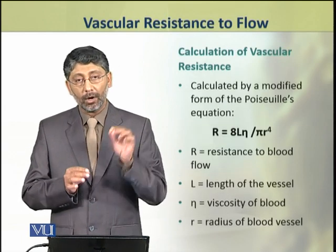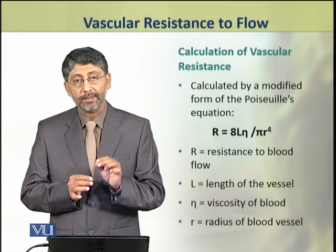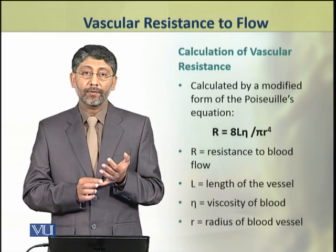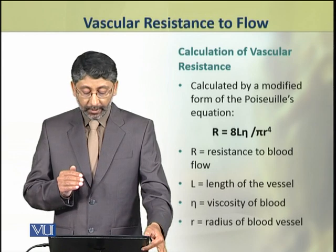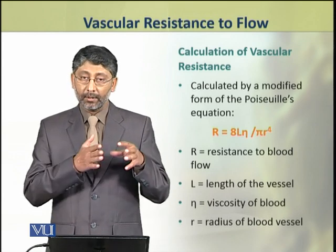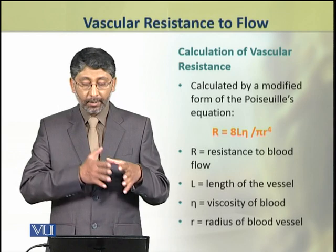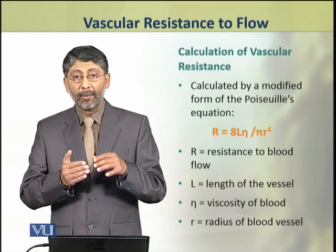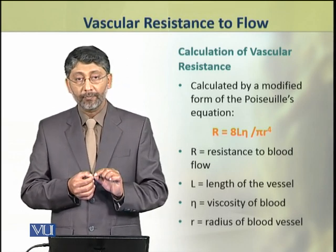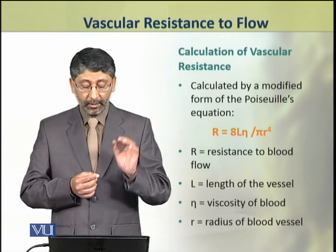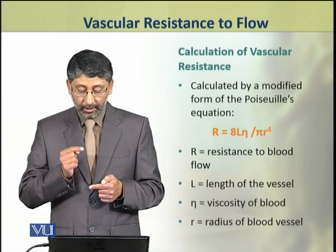Now we shall discuss the method and equation for calculation of vascular resistance. Vascular resistance is calculated by a modified form of Poiseuille's equation: resistance to blood flow equals 8Lη divided by πr to the power 4, where r is the resistance to blood flow, L is the length of the blood vessel, η (eta) is the viscosity of blood, and r is the radius of the blood vessel.